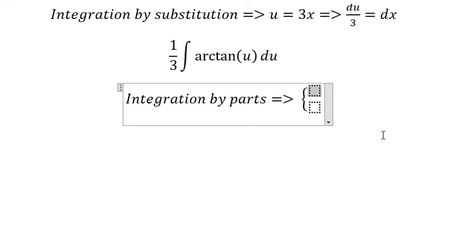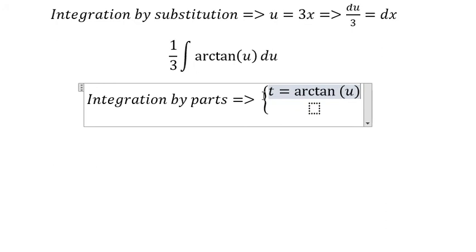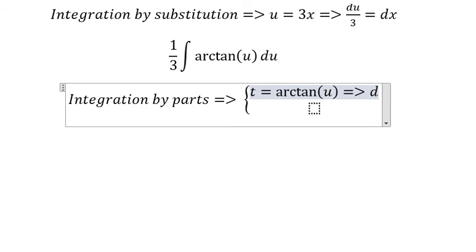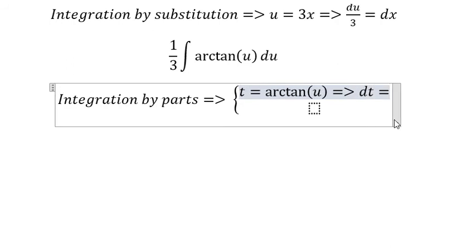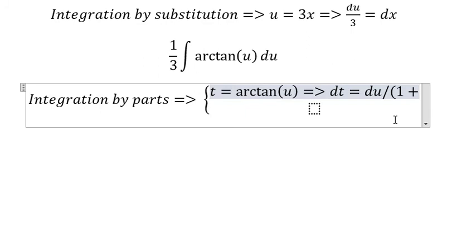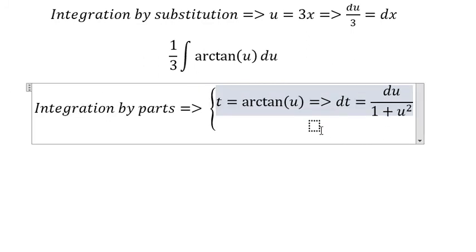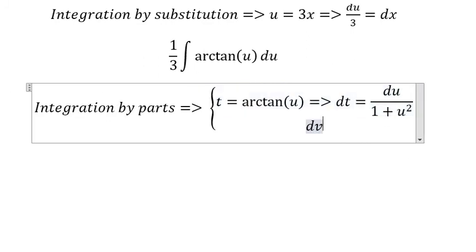We have t and dv. t equals arctan(u), so we have dt equals du over 1 plus u squared. dv is du, and v equals u.